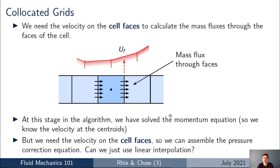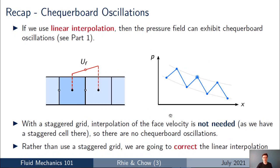The straightforward method would be to say: since flow variables vary linearly between cell centroids at best, can't we just use linear interpolation to calculate the face velocity uf directly? However, if you recall from part one of this lecture series, when we use a co-located variable arrangement and use linear interpolation for the face velocity, then assemble and solve the pressure correction equation, the pressure field can exhibit checkerboard oscillations. If you need a reminder of that phenomenon please go back to part one.